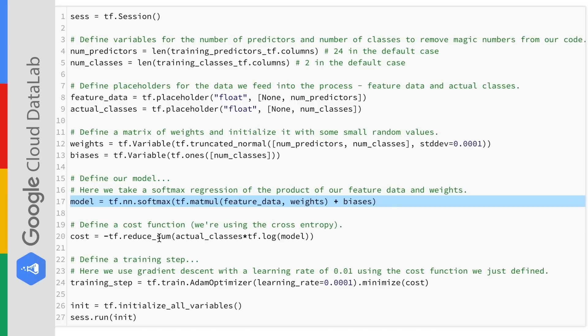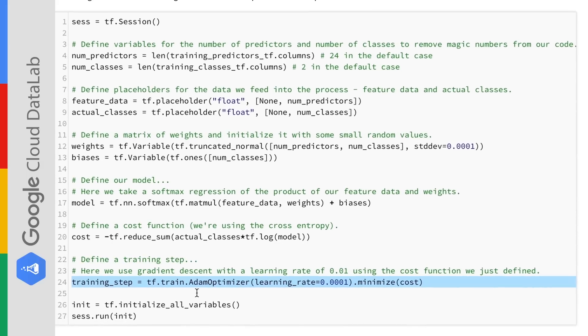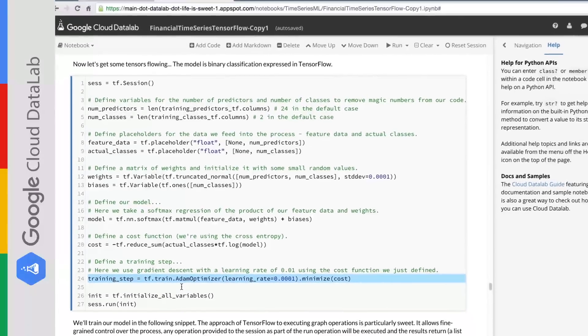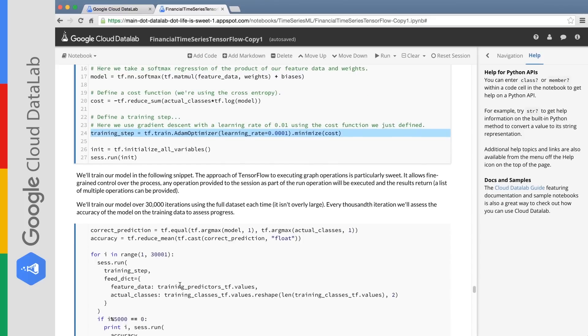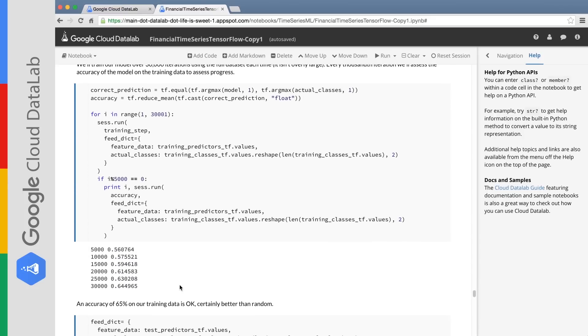So how do we train this model? It's all about cost. We define a cost function here. We're going to use the cross entropy. Training is then a process of iteratively changing our weights and biases such that the cost is minimized. And there, in a few lines of code, we've built our first TensorFlow model.